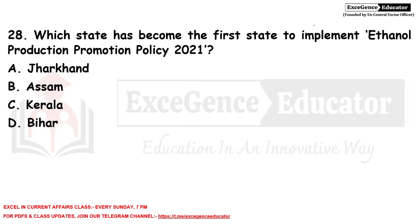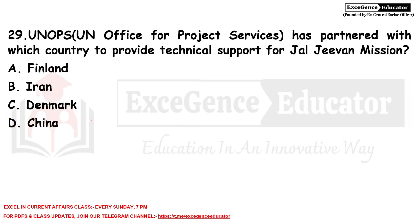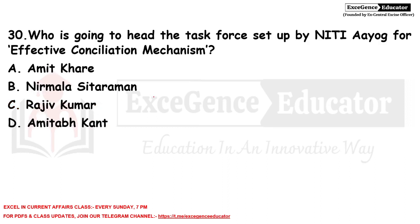The first state to implement Ethanol Production Promotion Policy 2021 is Bihar. The United Nations Office for Project Services (UNOPS) has partnered with Denmark to provide technical support for the Jal Jeevan Mission.